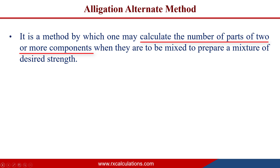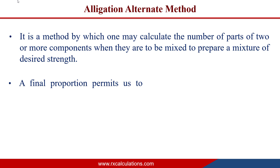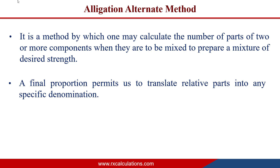Strength here actually means concentration. The number of parts of the components that you calculate gives you a final proportion, and that proportion allows you to translate those relative parts into any specific denomination. So once you know the parts of each component and you know the total quantity of preparation you need to make, you can calculate the exact amounts you need to combine.